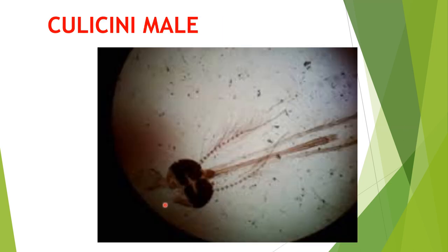In Culicine male, maxillary palpi are longer than the proboscis, and antennae are more bushy. These features can be seen in the slide.